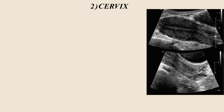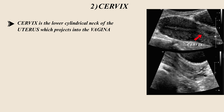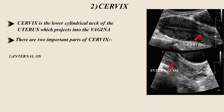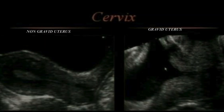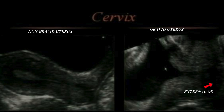Now let's talk about the cervix. The cervix is the lower cylindrical neck of the uterus which projects into the vagina. There are two important parts of the cervix. Number one is the internal os, which is the junction of the uterine cavity and the endocervical canal. Number two is the external os, which is the junction of the endocervical canal and the vagina. We can see the external os only in a non-gravid uterus, but in a gravid uterus we can see both the internal and external os.